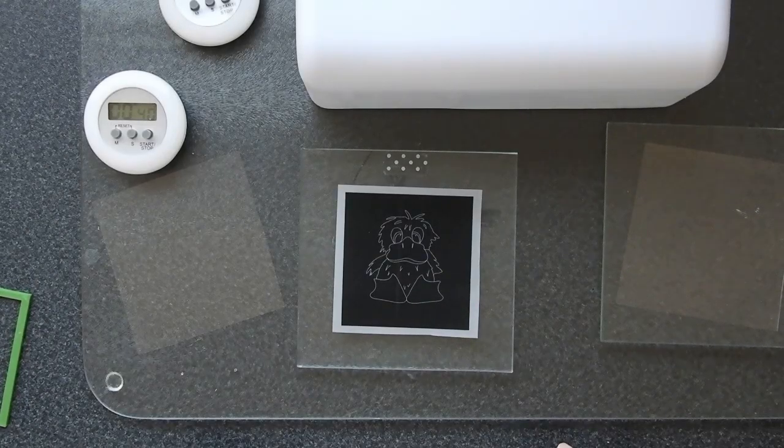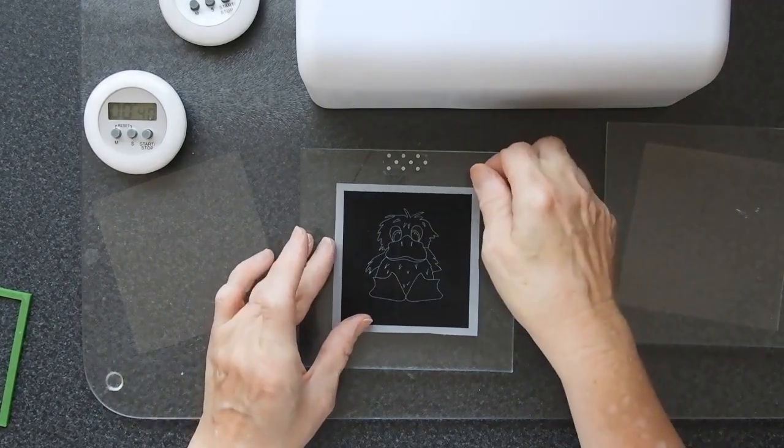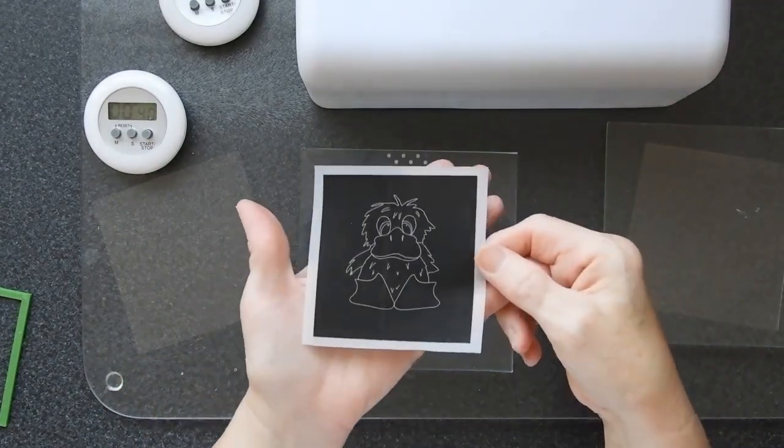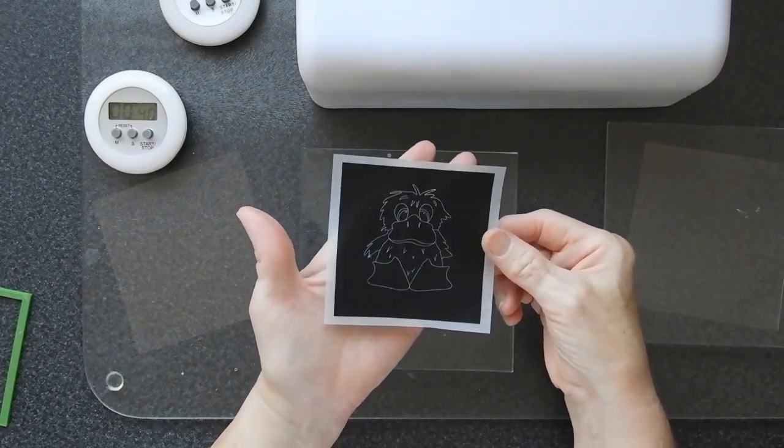Hi, it's Sandra here from Create in Spain and today I'm going to show you a stamp that I'm making. This is my negative, it's printed on tracing paper and this one is called Sitting Duck.